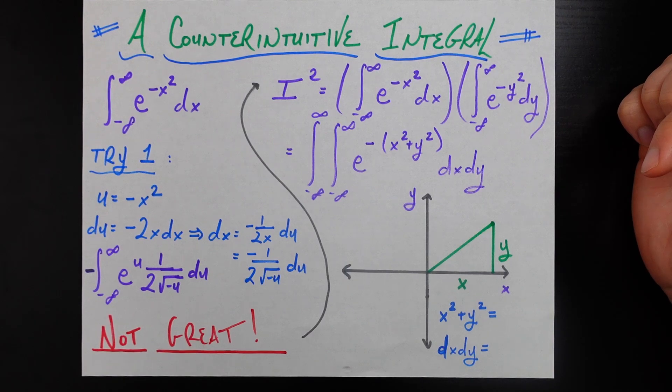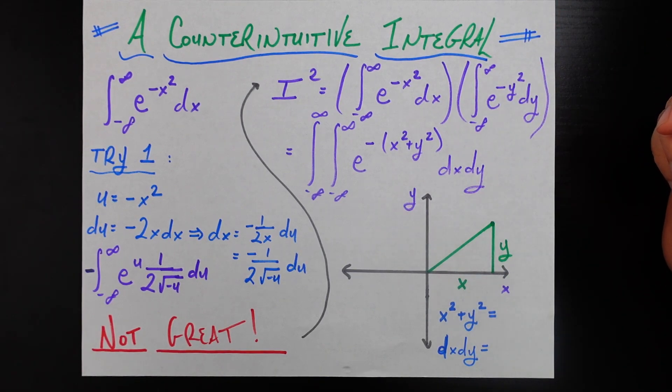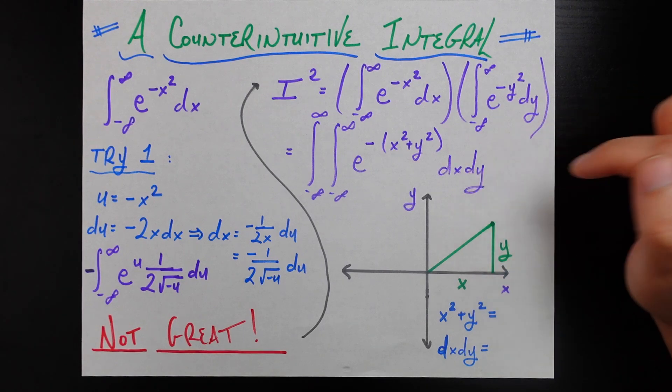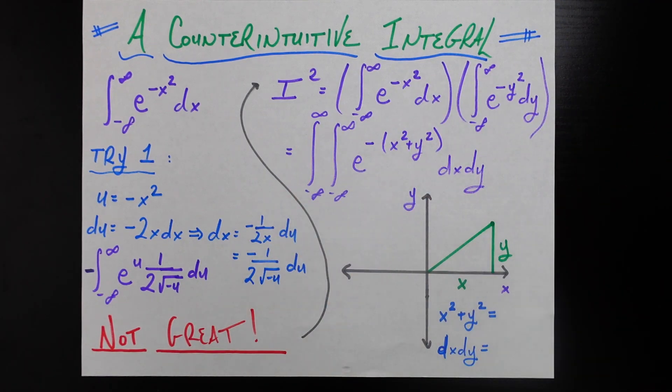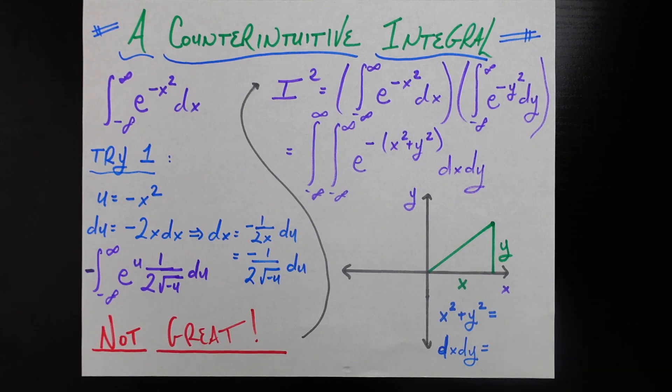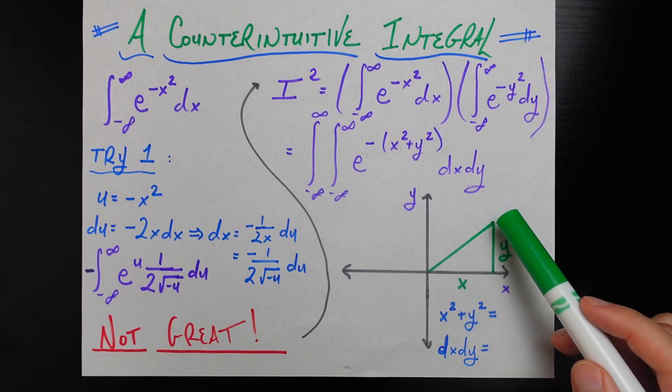We get two integrals both going from negative to positive infinity. e to the negative x squared times e to the negative y squared combines to e to the negative x squared plus y squared, dx dy. This is the peak confusion. This does not seem any simpler. It starts getting simpler when we change our perspective, very literally. We're going to change the coordinate system from Cartesian coordinates in terms of x and y to polar coordinates in terms of a radius and an angle, R and theta.